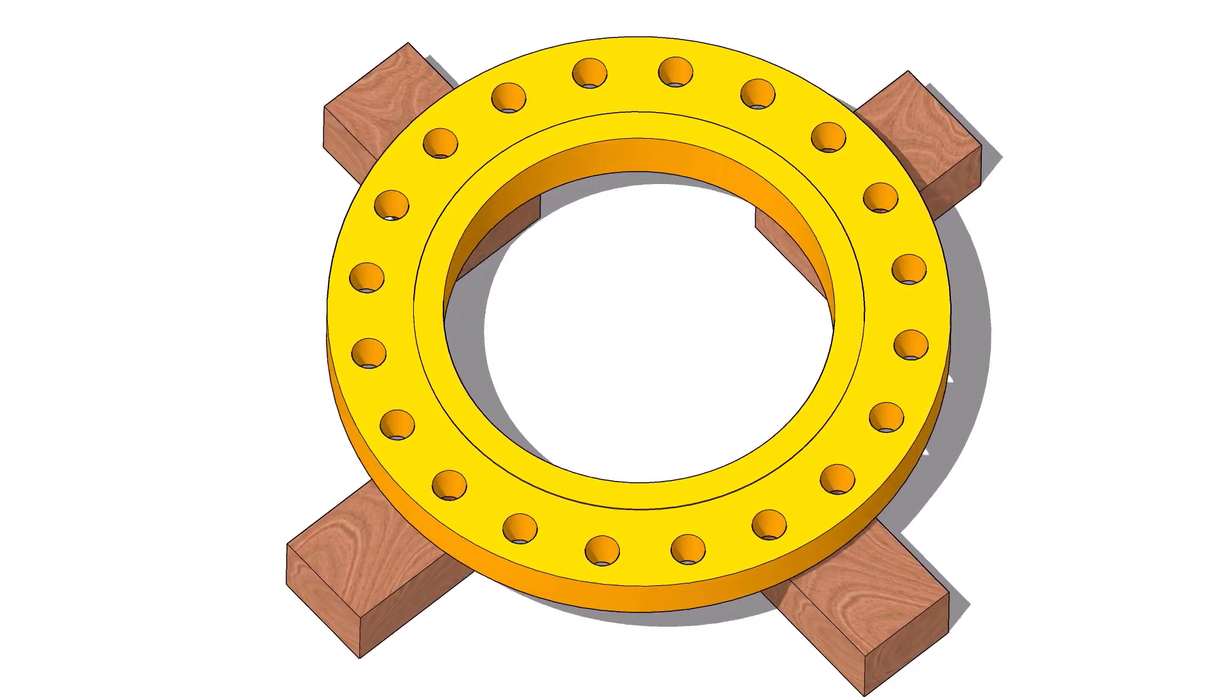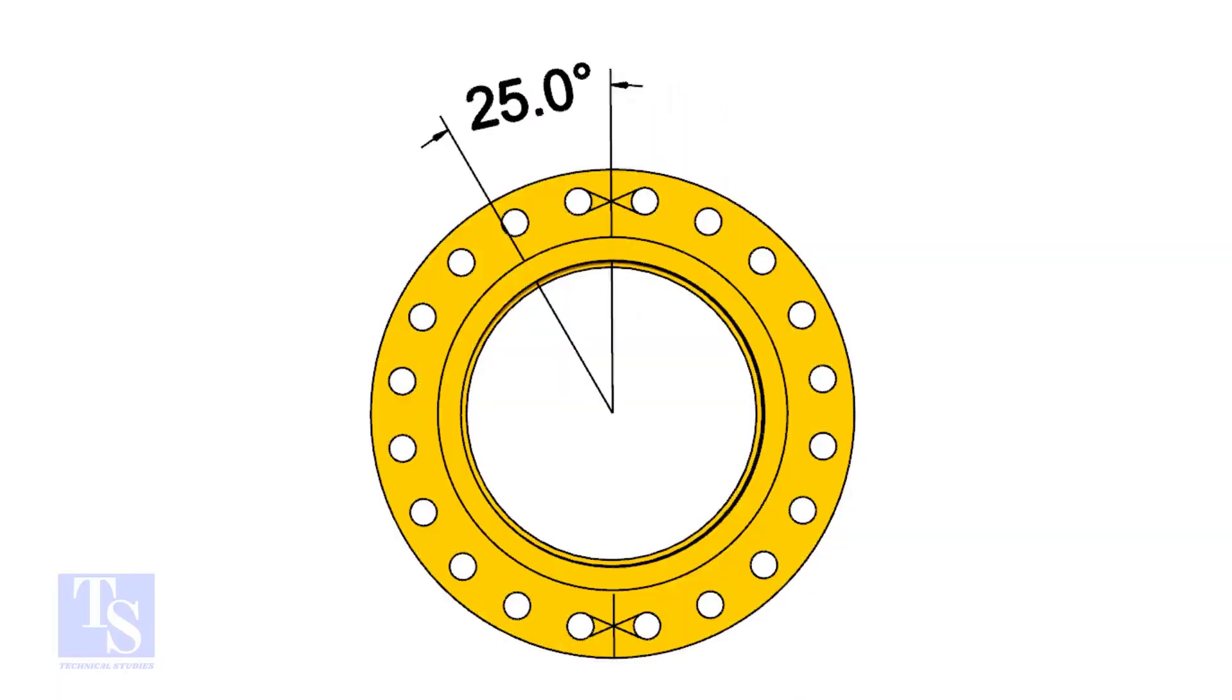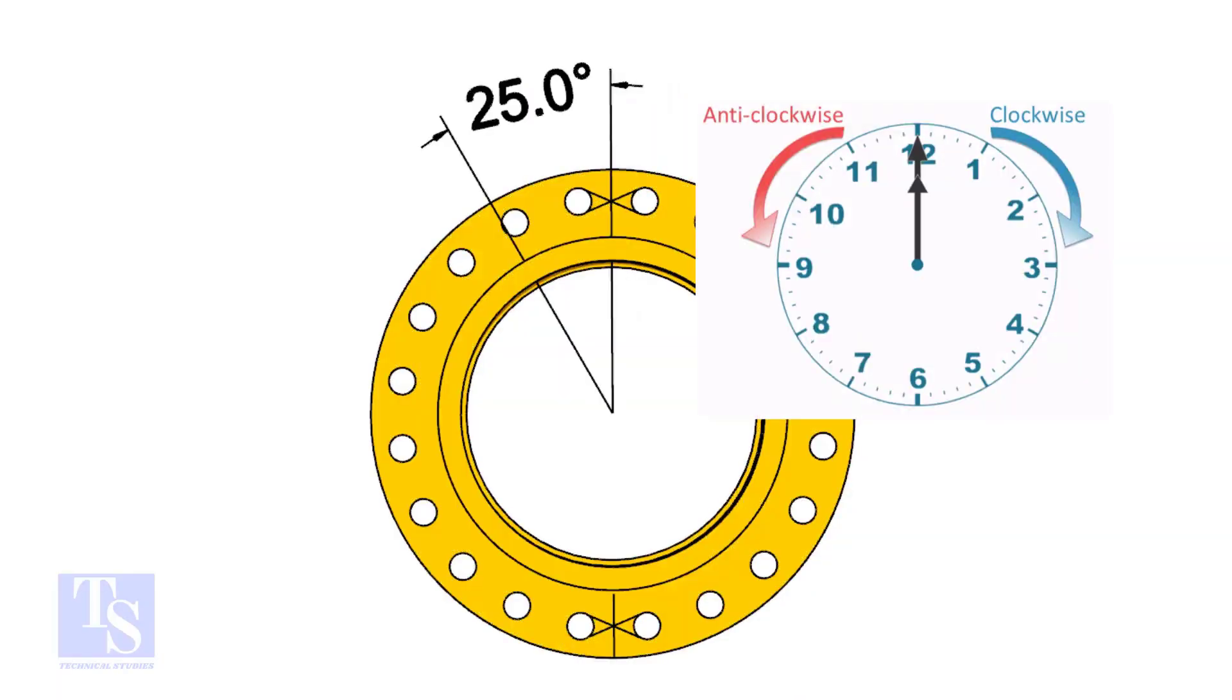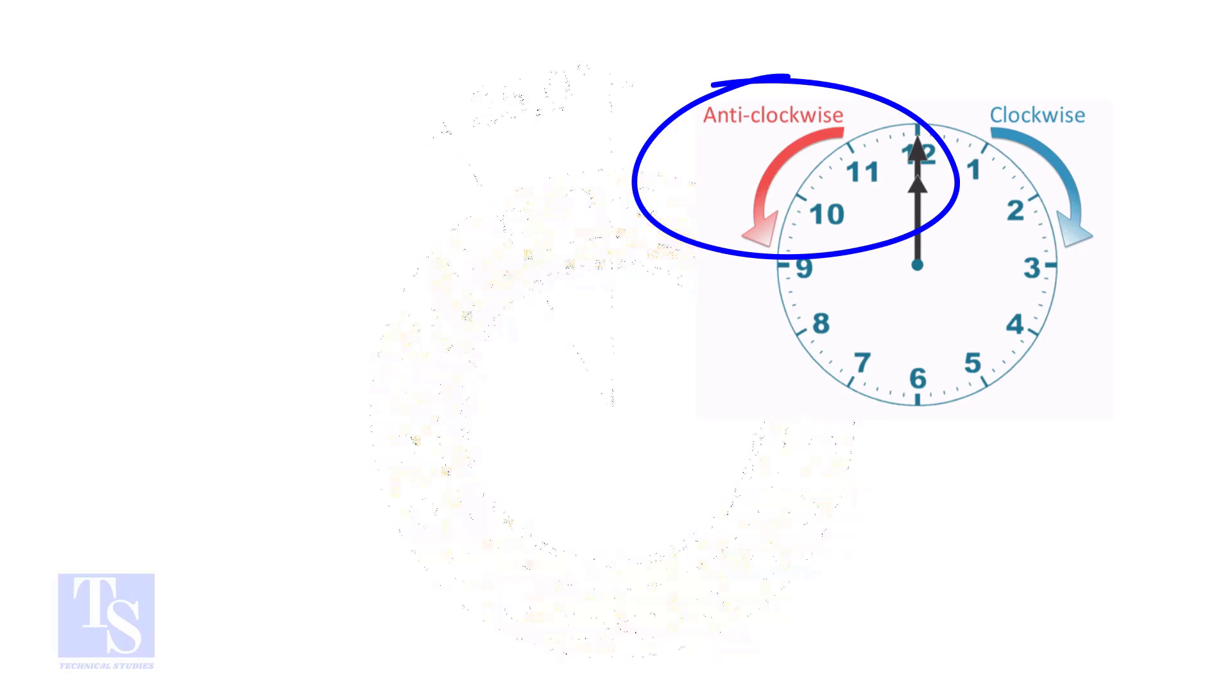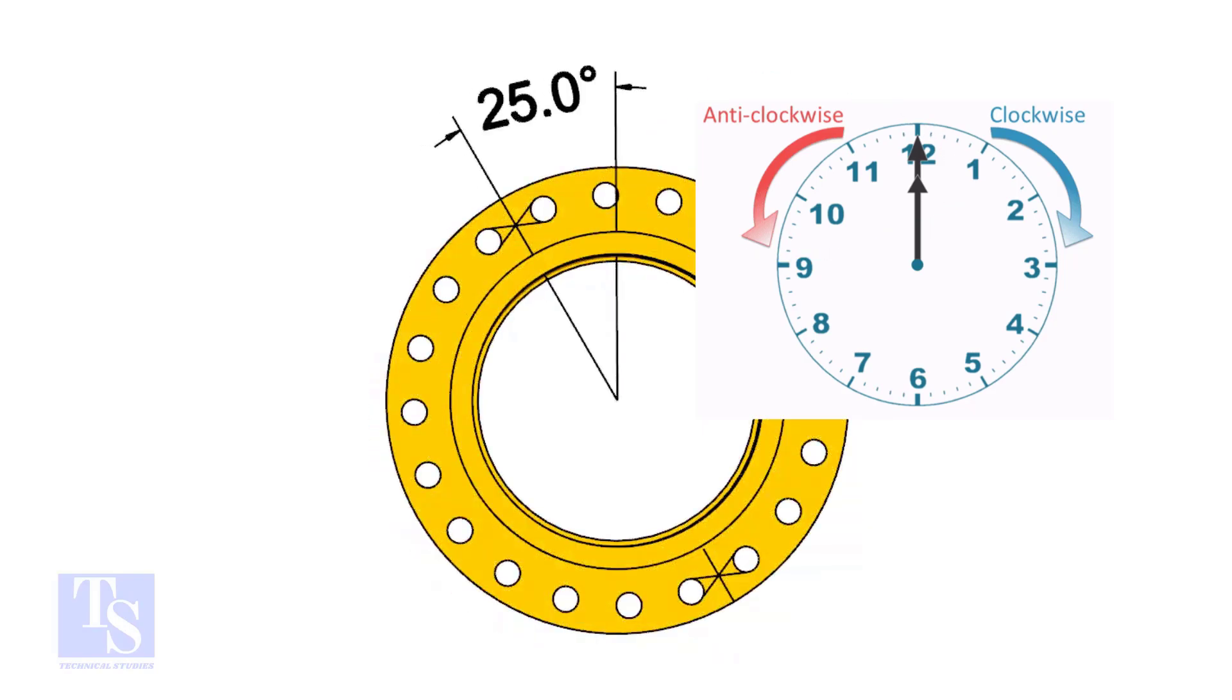The pipe and the flange size is 16 inch, and the flange will rotate 25 degrees anticlockwise. Hope you all know the difference between clockwise and anticlockwise rotation.